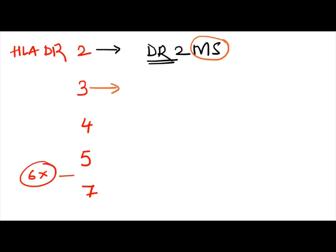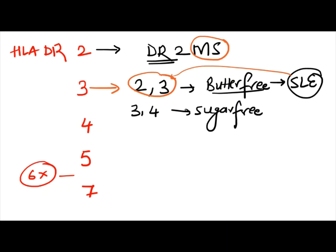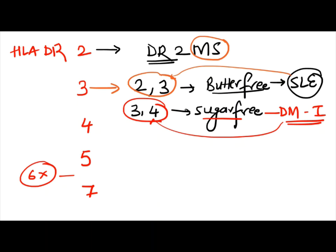For HLA-DR3, remember '2-3 is butter-free' — butter-free refers to the butterfly rash, which is seen in SLE. So SLE is associated with DR2 and DR3. Then '3-4 is sugar-free' means diabetes mellitus type 1 (insulin-dependent), so DM type 1 is associated with DR3 and DR4.